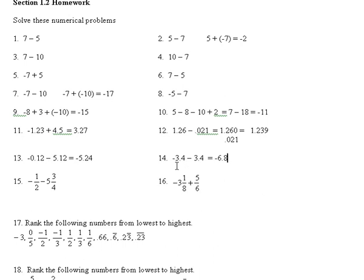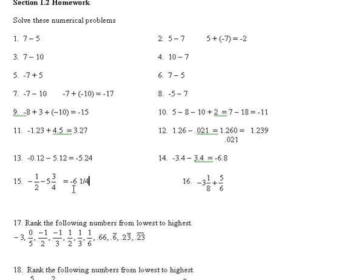If this problem had been negative 3.4 plus 3.4, the answer would have been 0. On this fraction problem, you have to get a common denominator. The signs are the same, so you bring along the sign and add them. 1 and 1/2 is the same as 2 and 4/... and 2.4 plus 3.4 is 5.4, and that 1.4 plus the 5 gives 6.4. So the answer is negative 6.4.